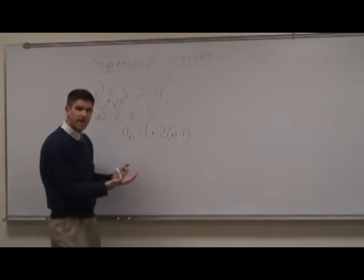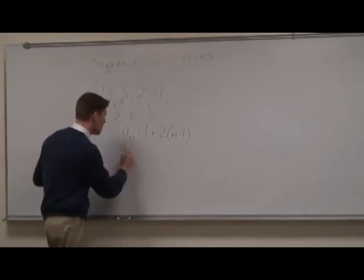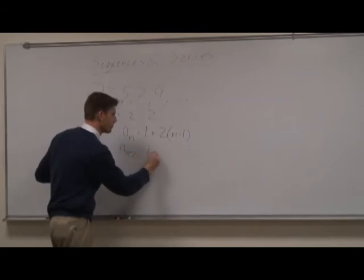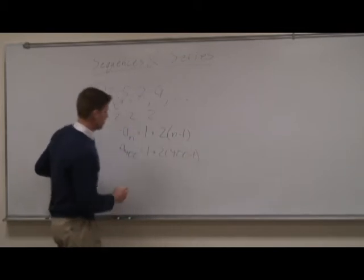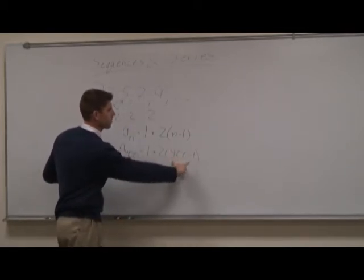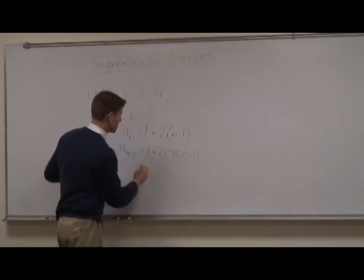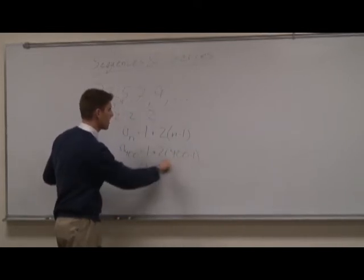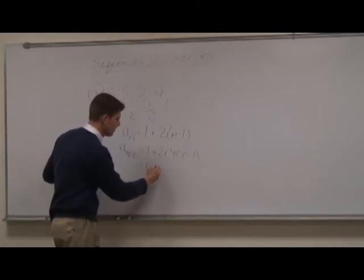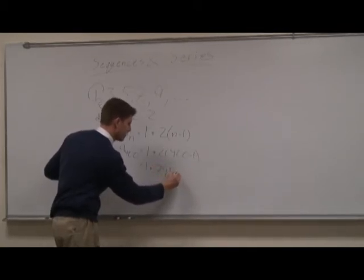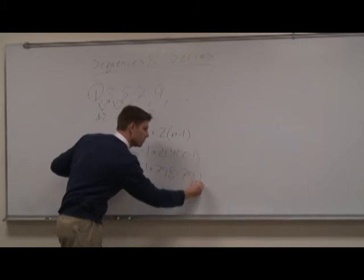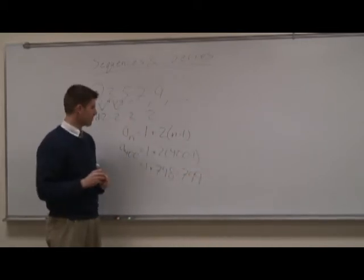Perfect. So that is a description of the sequence in what we call closed form, because it would be really easy to say, what's that 400th term? A400 is, let's see, I could distribute, but I think I'll just do what's inside the parentheses first. So that's 399 times 2. So what is that? 798.